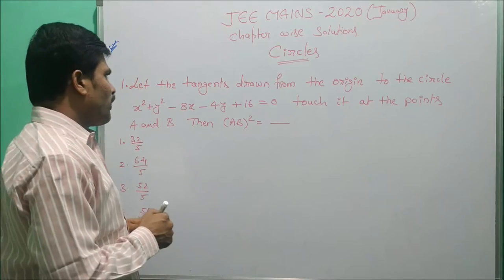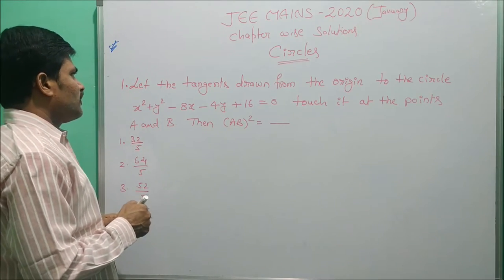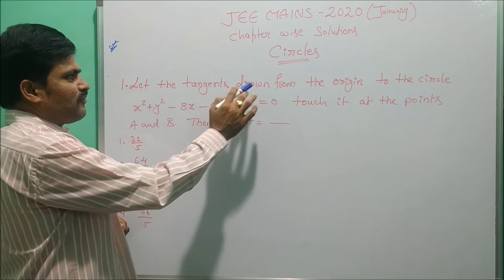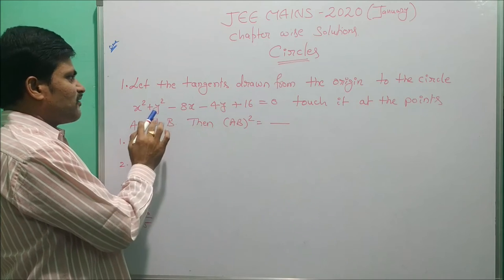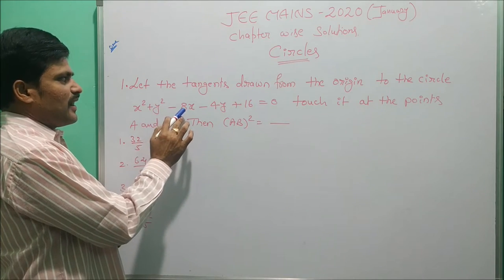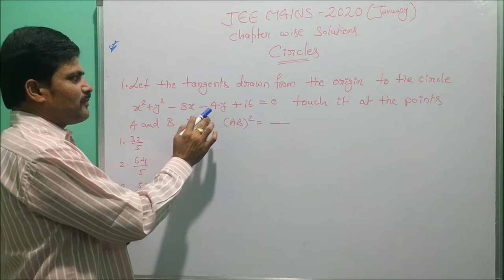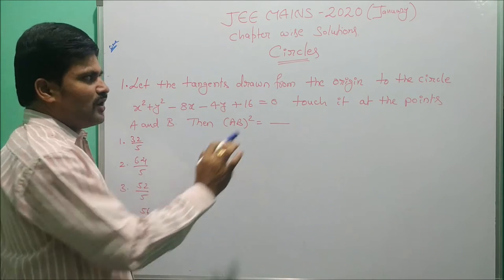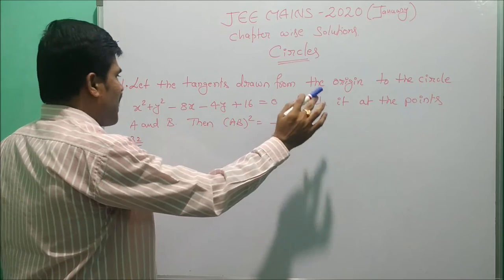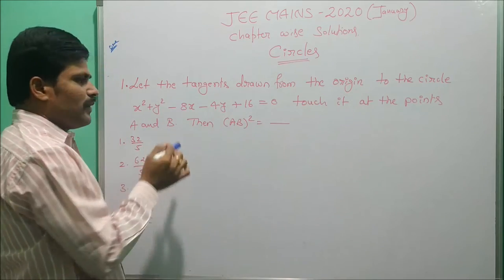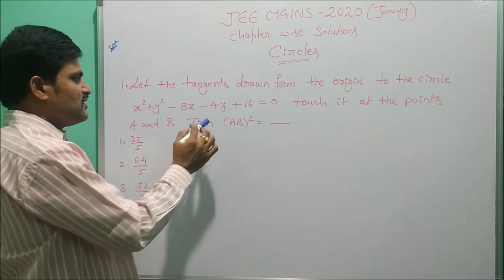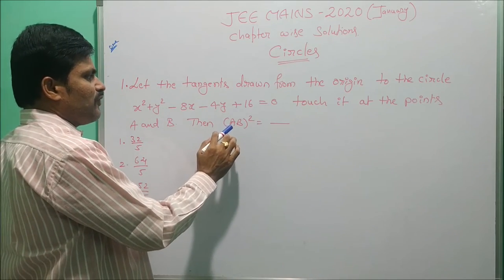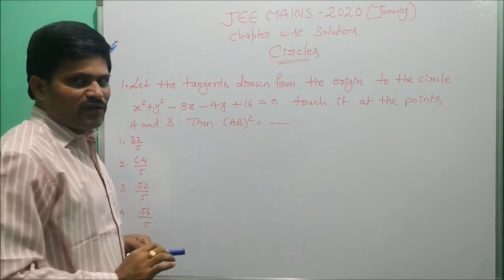Now the first problem is: let the tangents drawn from the origin to the circle x² + y² - 8x - 4y + 16 = 0 touch it at the points A and B. Then find the value of AB².